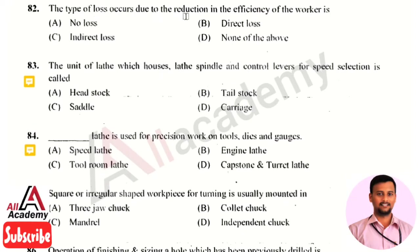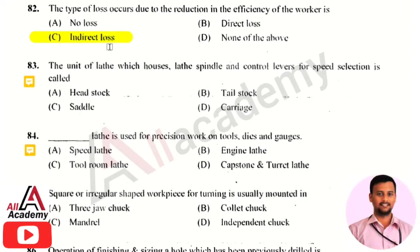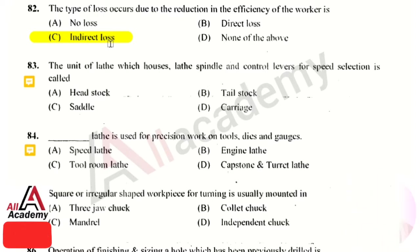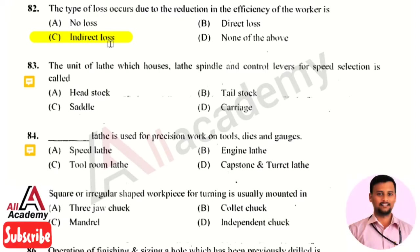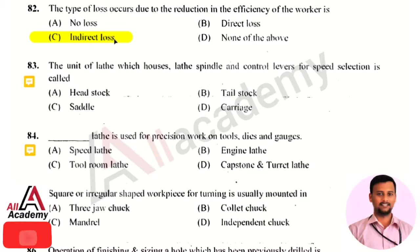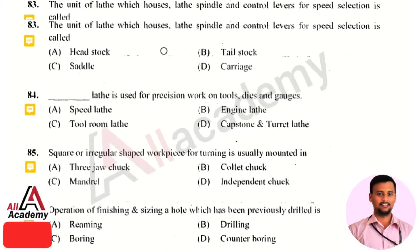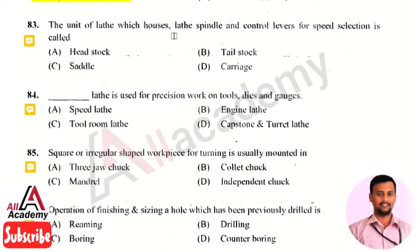The next question: the type of losses that occur due to reduction in the efficiency of a worker — the right answer is option 3, that is indirect losses. Indirect losses are losses which occur in production or in any organization due to reduced efficiency of a worker. The next question: the unit of a lathe which houses the lathe spindle and control levers for speed selection is called what?